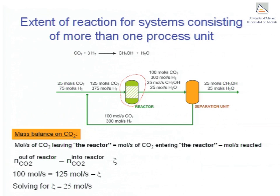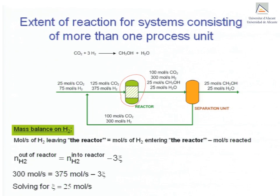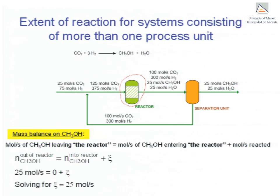We first write a material balance on each component over the reactor to practice using the concept of extent of reaction. The material balance on carbon dioxide reads: moles per second of carbon dioxide leaving the reactor equals moles per second entering the reactor minus moles per second reacted, in this case 1 times the extent of reaction Xi. Solving for Xi, the extent of reaction equals 25 moles per second. Doing the same for hydrogen gives exactly the same value, 25 moles per second. The same material balance over the reactor on methanol takes us yet again to the same conclusion: the extent of reaction is 25 moles per second.